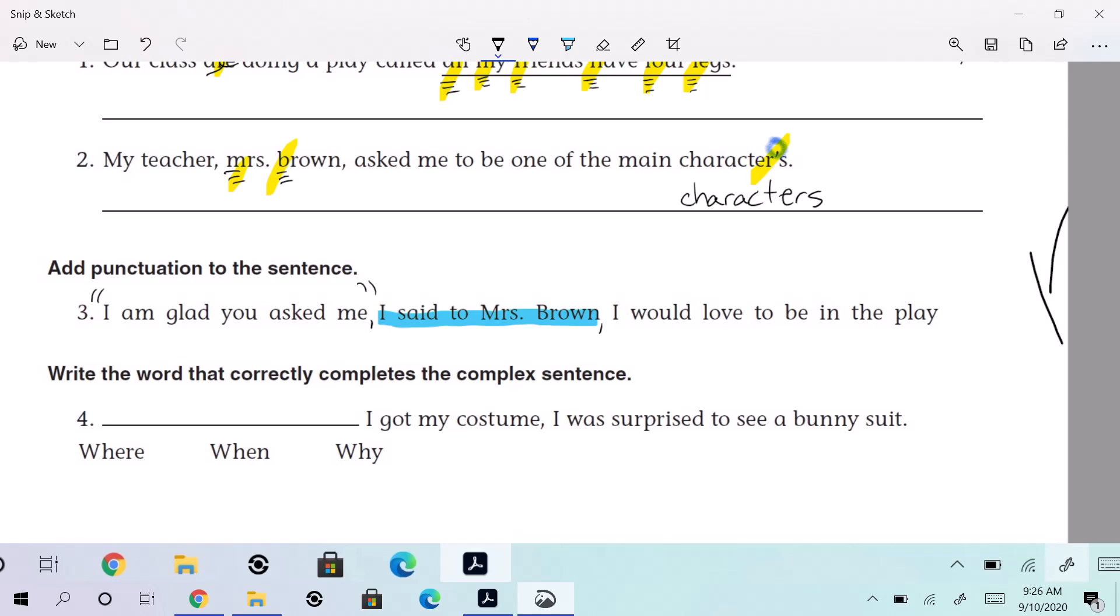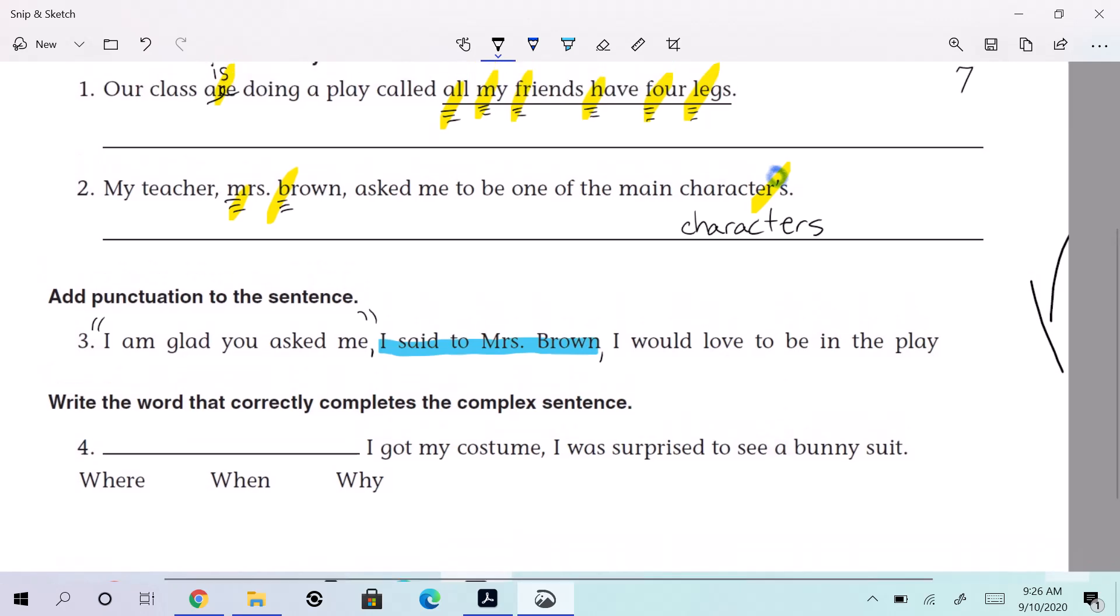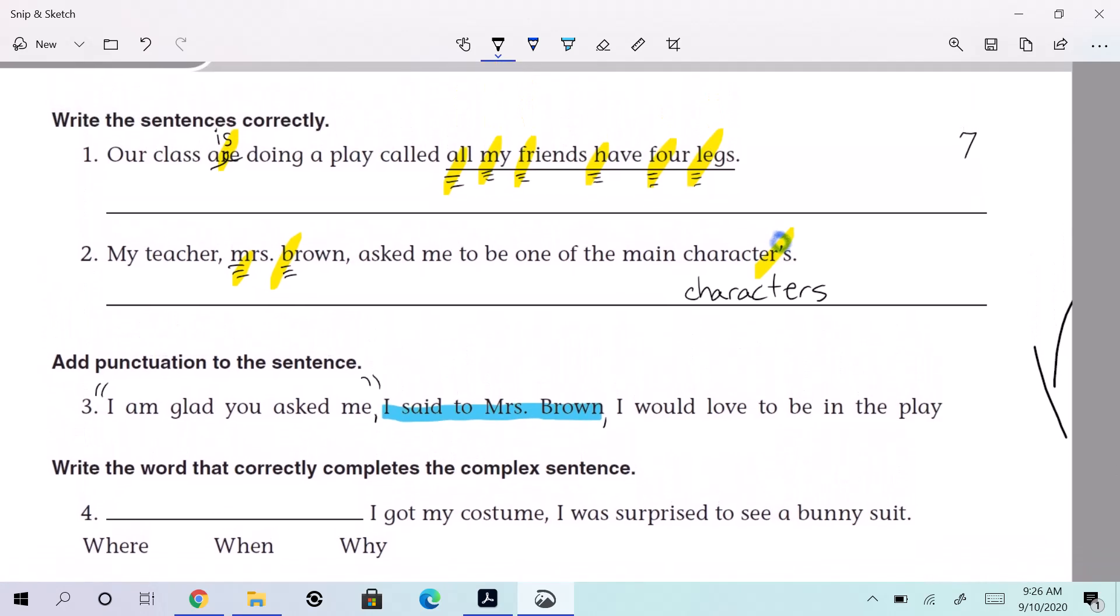And then what are we going to do? I would love to be in the play. Is that something that someone's saying? So what do we need? Someone go up to the board and point, kind of show me what I need to do. Someone go point to me and tell me where the punctuation goes. Evan, your hand went up like crazy. All right, Evan's the man today. Go get him, Evan. All right. What do I need? Show me.